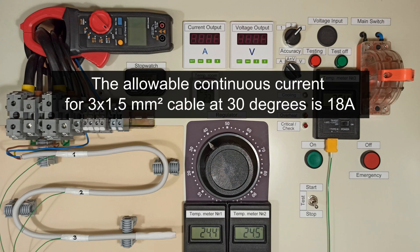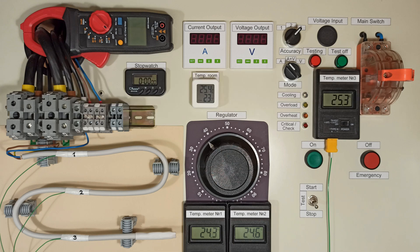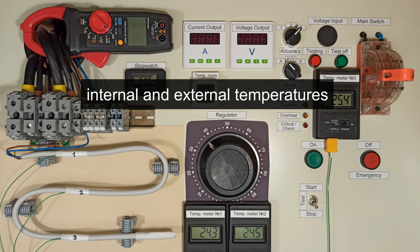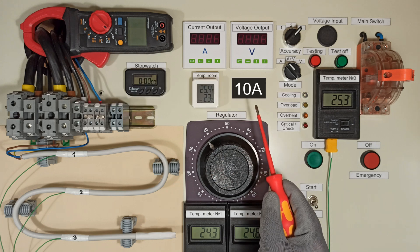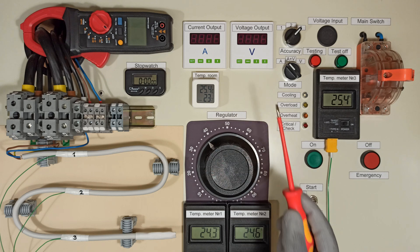The permissible continuous current for 3 by 1.5 mm² cable at 30 degrees is 18 amps. I really want to see what values the internal and external temperatures will reach at 10 and 16 amps. Let's begin.